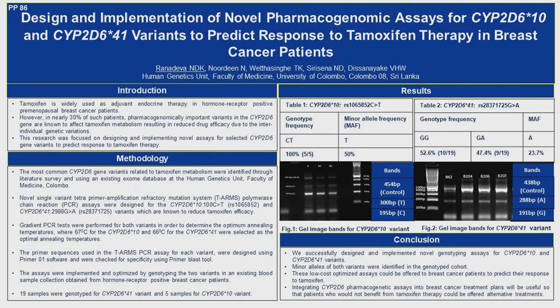A 0.5 minor allele frequency was detected for variant *10, and for variant *41, it was 0.23. This is in alignment with the available literature.